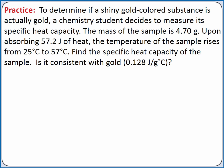Let's practice. Our problem reads: to determine if a shiny gold colored substance is actually gold, a chemistry student decides to measure its specific heat capacity. The mass of the sample is 4.7 grams. Upon absorbing 57.2 joules of heat, the temperature of the substance rises from 25 degrees Celsius to 57 degrees Celsius.